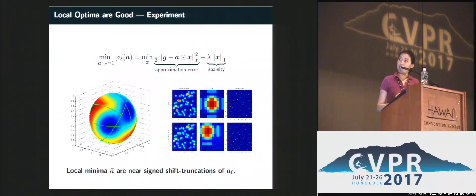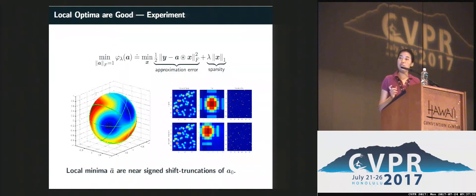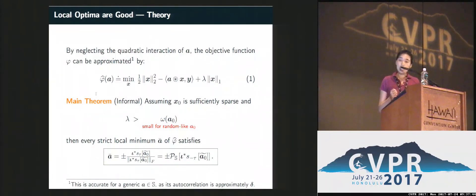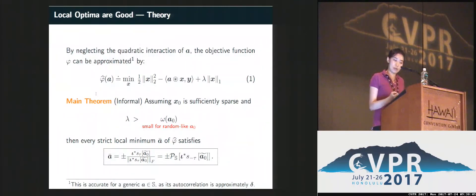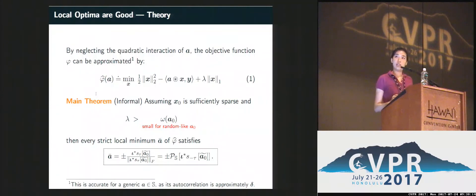I show an example: on the top is the ground truth, and the bottom is one local minimum we found. It is not the ground truth exactly, but it's quite close — it's a shift-truncation of the ground truth, reflecting the effect of shift symmetry. We can corroborate this observation with theory. Under some idealization — neglecting higher-order quadratic interactions of A, which is accurate for most A on the sphere — we can show that if the sparse signal is sparse enough and lambda is set large enough to encourage sparsity, then every local minimum of this function is a shift-truncation of the ground truth.